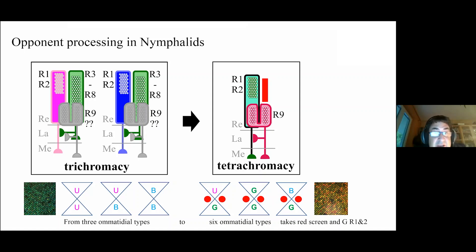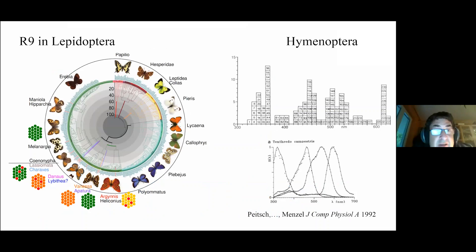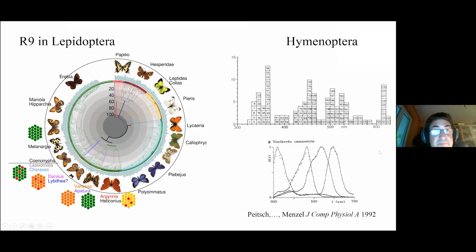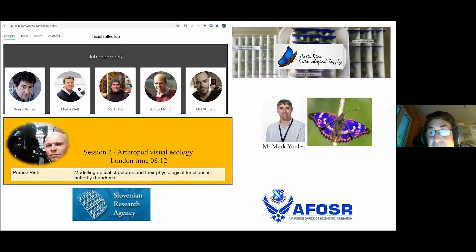In conclusion, opponent processing in nymphalid butterflies is conveyed through long visual fibers R1 and R2, which in trichromatic retinas with non-mosaic eye shine express UV or blue opsins and receive opponent signals from R3-R8, never in the opposite direction. This has evolved into fully blown tetrachromacy by developing a new ommatidial type where R1 and R2 express green opsin and receive opponent input from a red-sensitive R9 unit created by optical filtering and red screening pigment. R9 in Lepidoptera likely has a wider role; Hymenopterans are also good candidates to have R9 as red receptors, as shown for honeybees by Page and Menzel. Thanks to butterfly suppliers, and please see the upcoming lecture by Primoz Zivcic developing this optical model further.